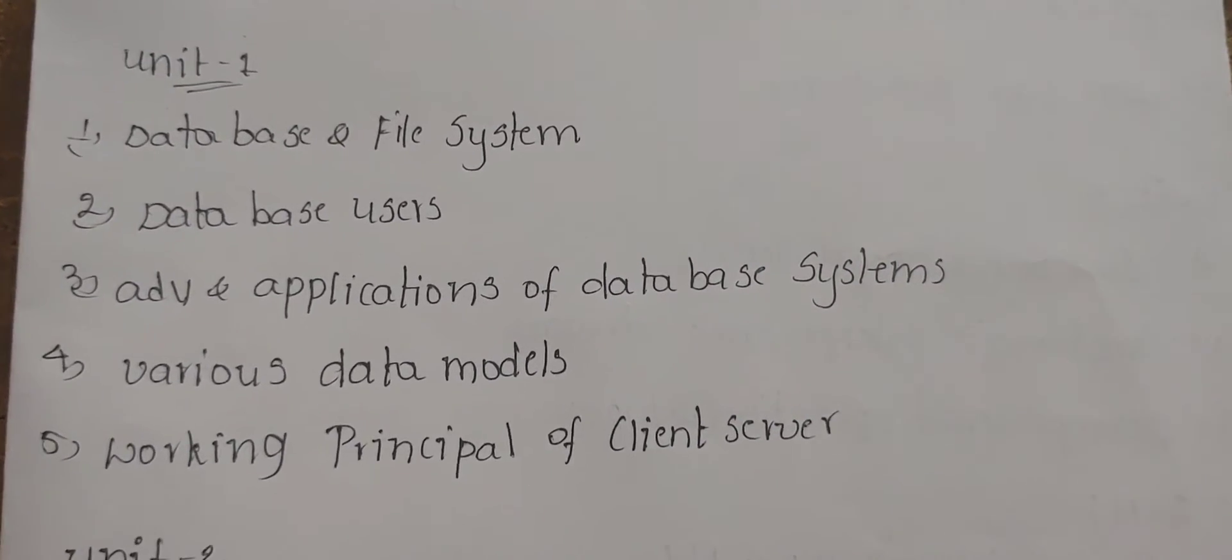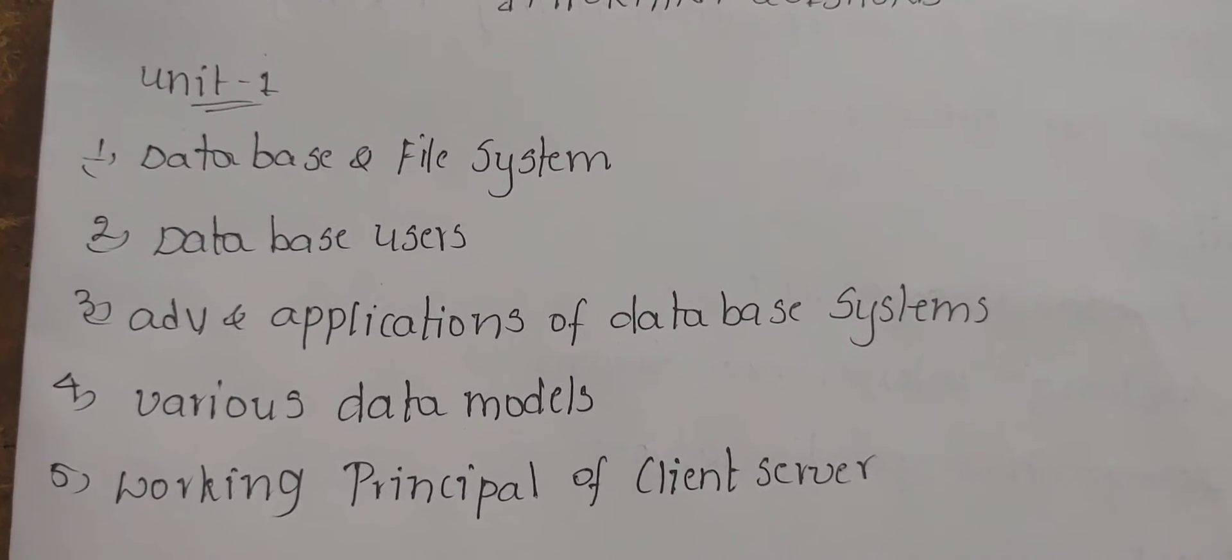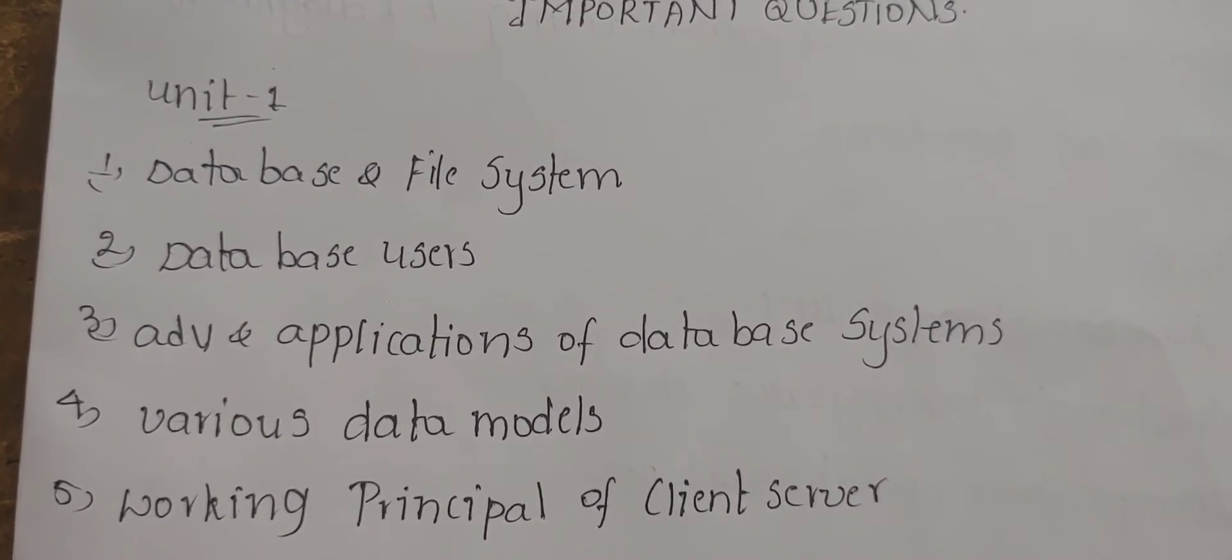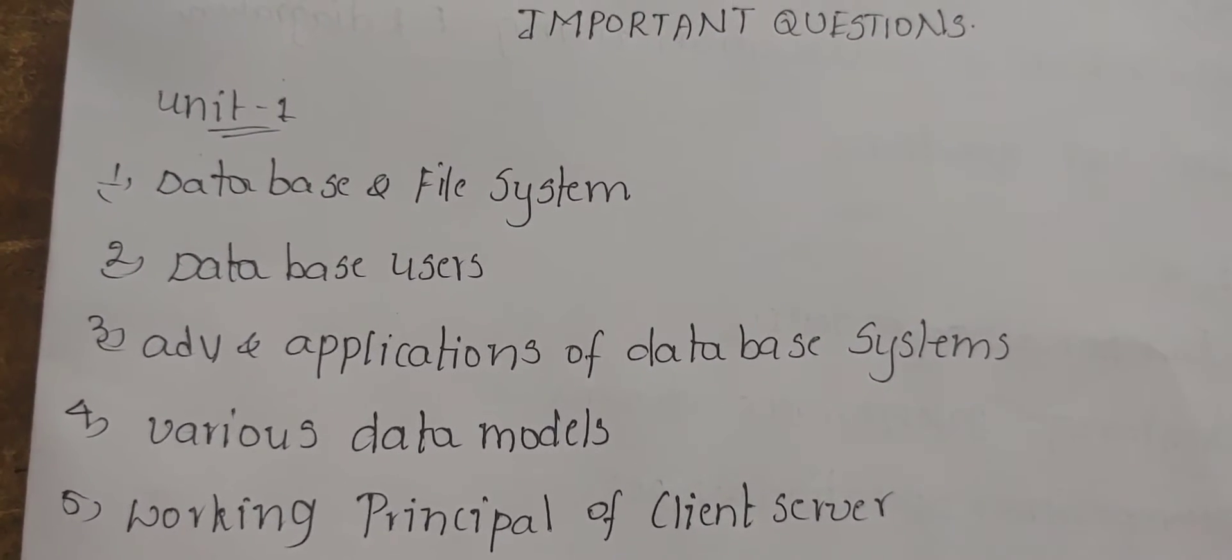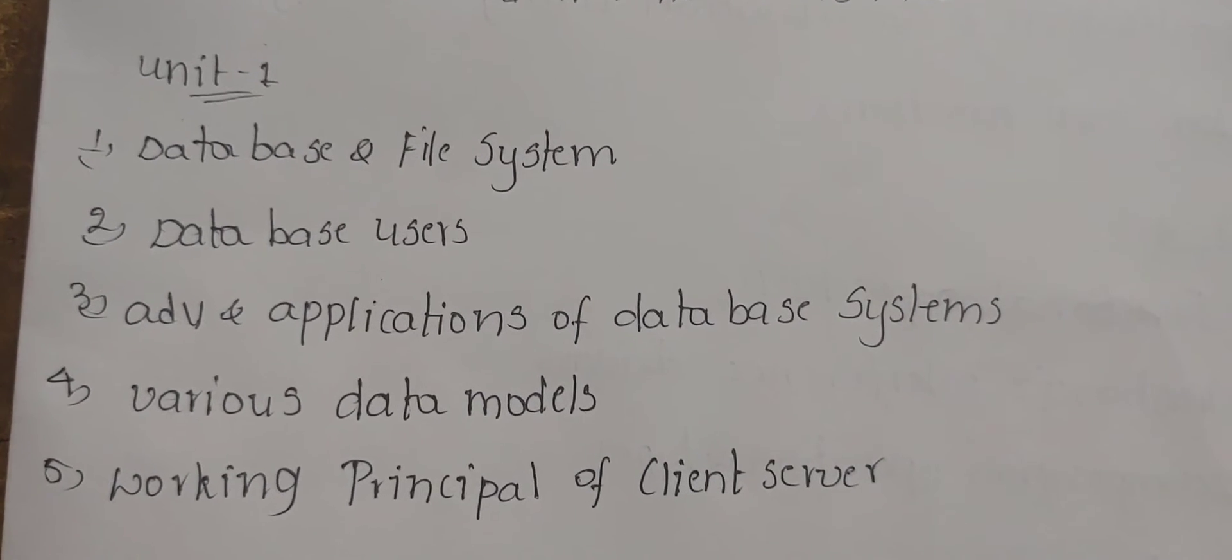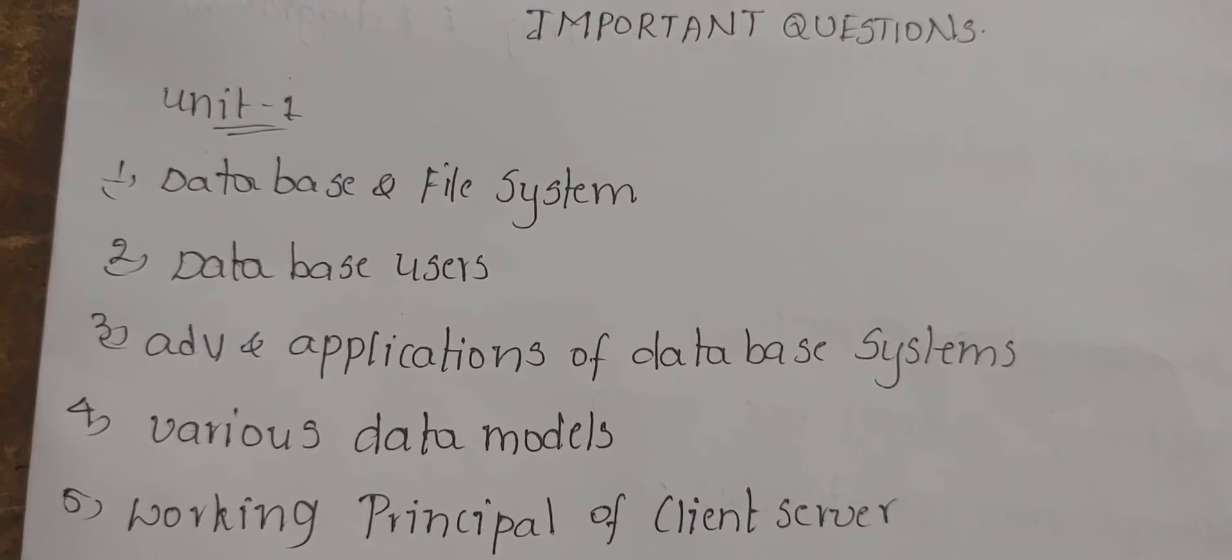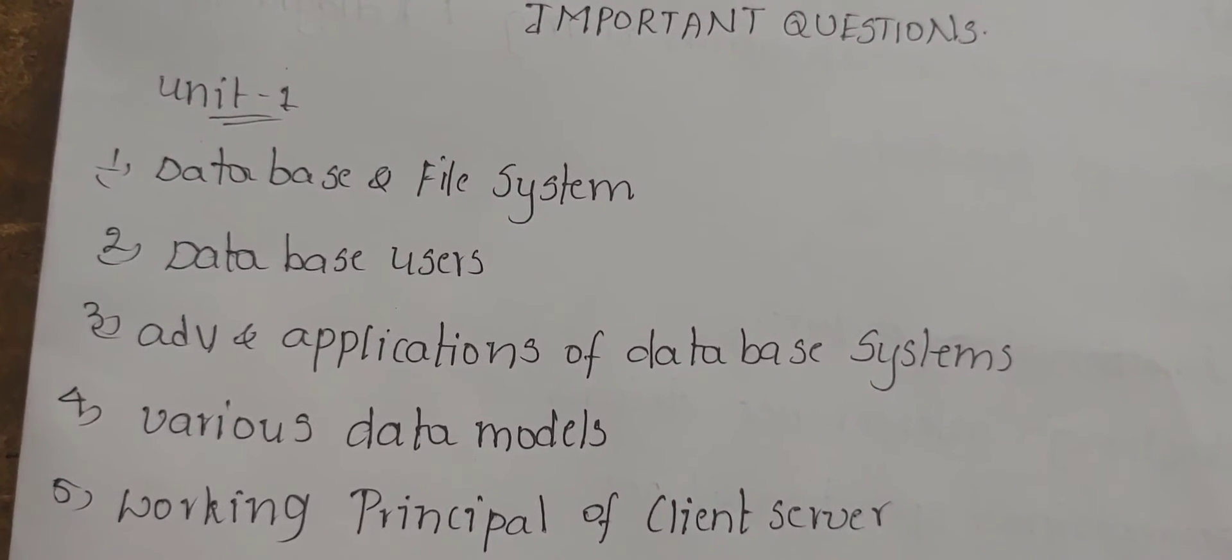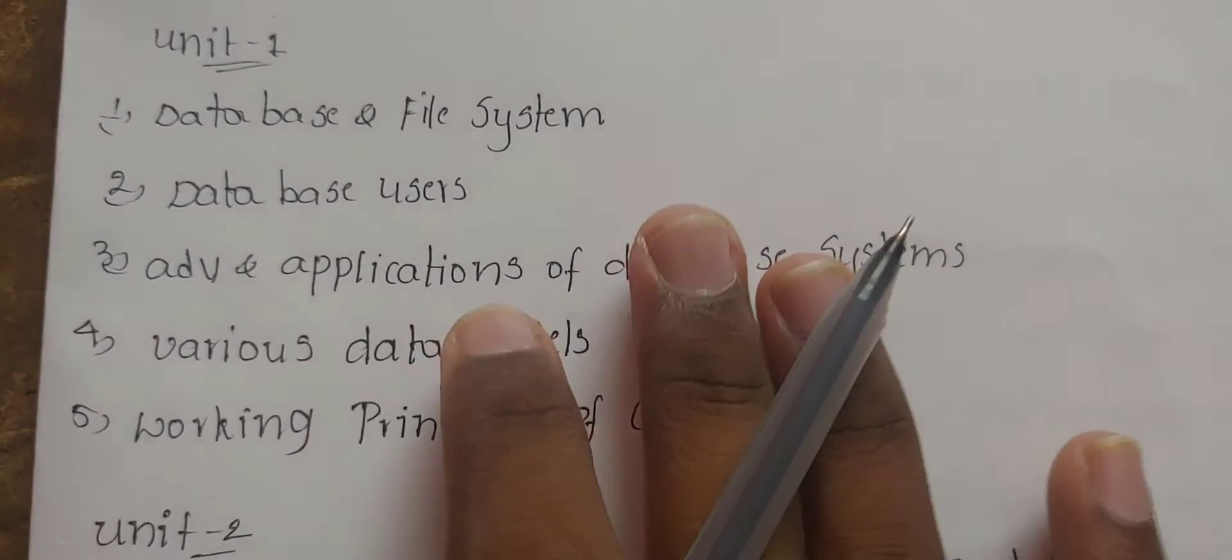There are five units. If you prepare these five units, thirty-five marks are confirmed. Already started covering them. So what you need to write about, over thirty plus is coming. The key is to pass.